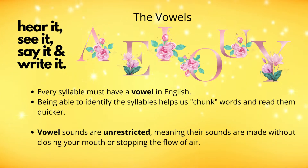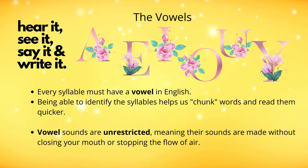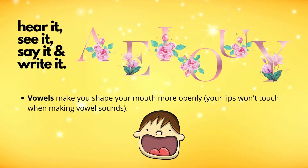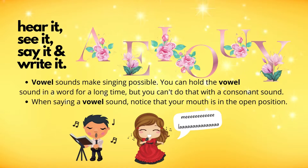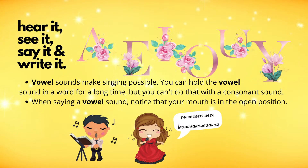Being able to identify the syllables helps us chunk words and read them quicker. Vowel sounds are unrestricted, meaning their sounds are made without closing your mouth or stopping the flow of air. Vowel sounds make you shape your mouth more openly. Your lips won't touch when making vowel sounds. Vowel sounds make singing possible — you can hold a vowel sound for a long time. When saying a vowel sound, notice that your mouth is in the open position.